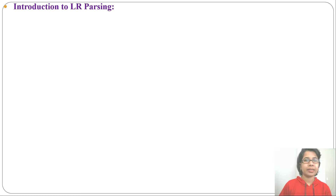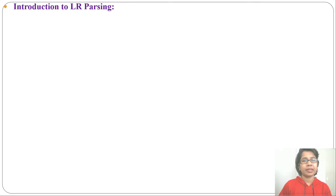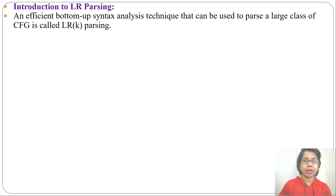Let's discuss LR parsing. Bottom-up parsing is of two types: one is operator precedence parsing, another is LR parsing. I already discussed operator parsing, just go through the previous video. LR parsing is an efficient bottom-up parsing that can be used to parse a large class of context-free grammars.